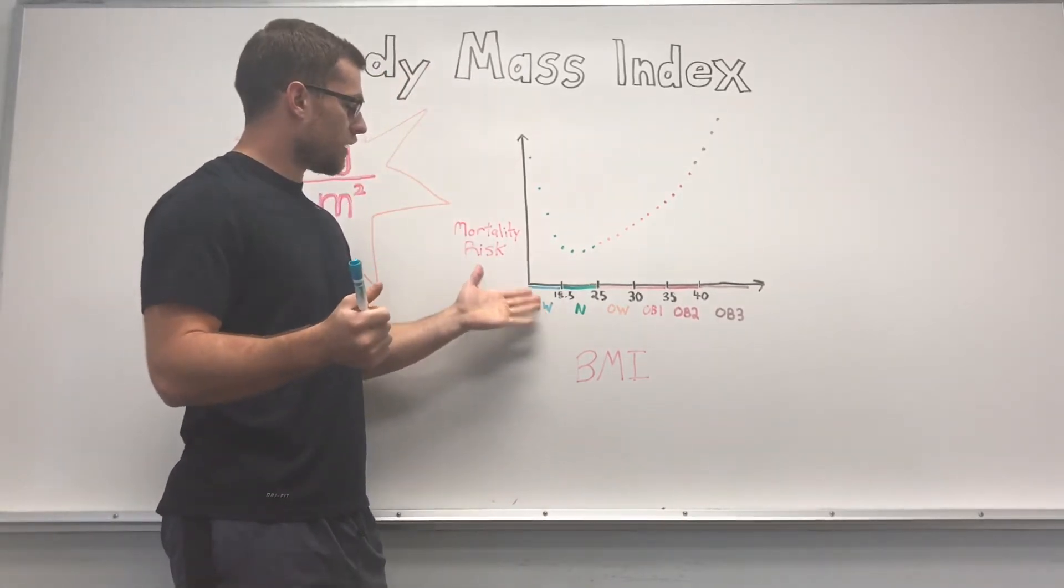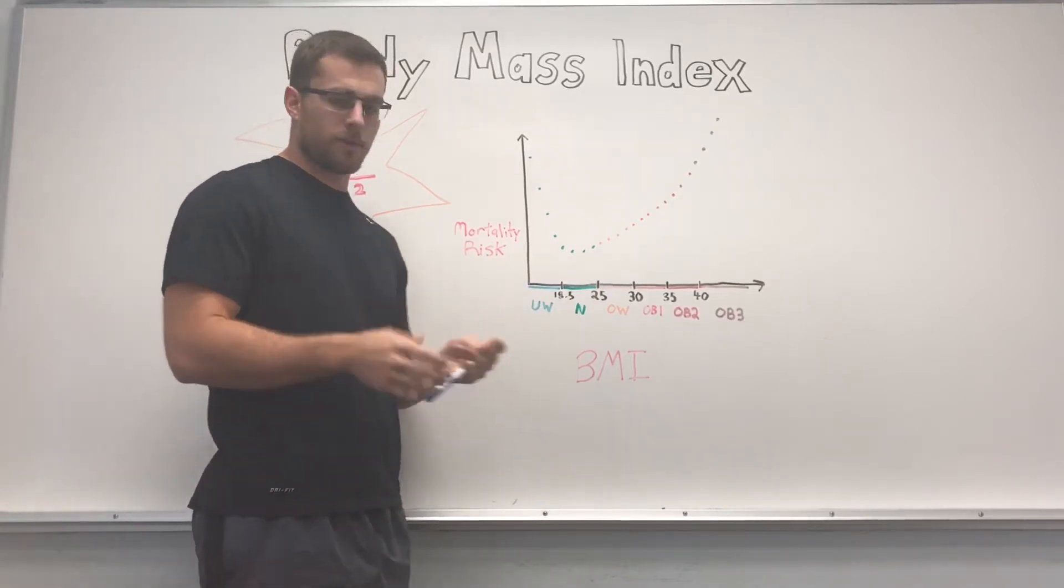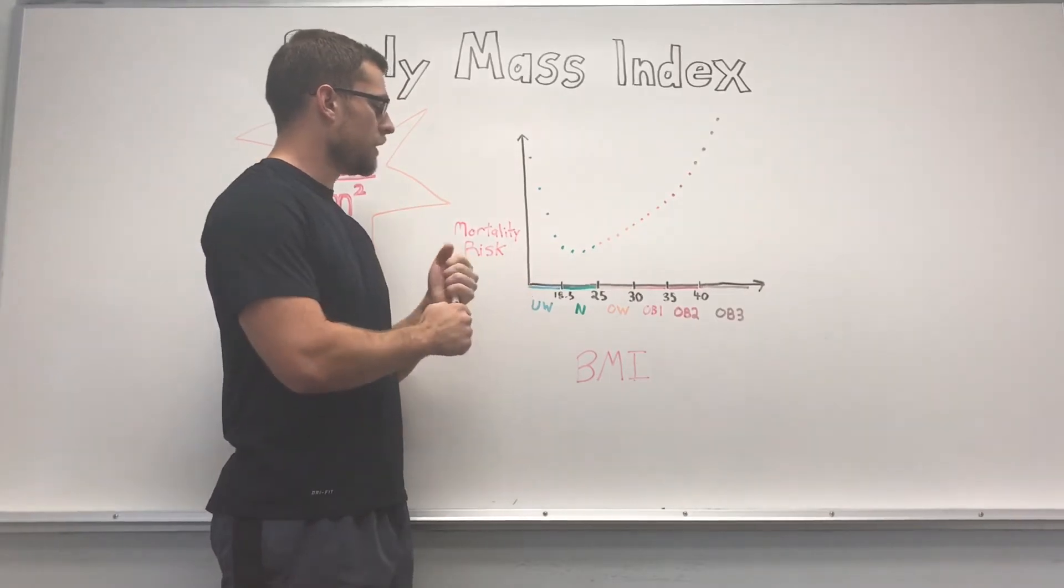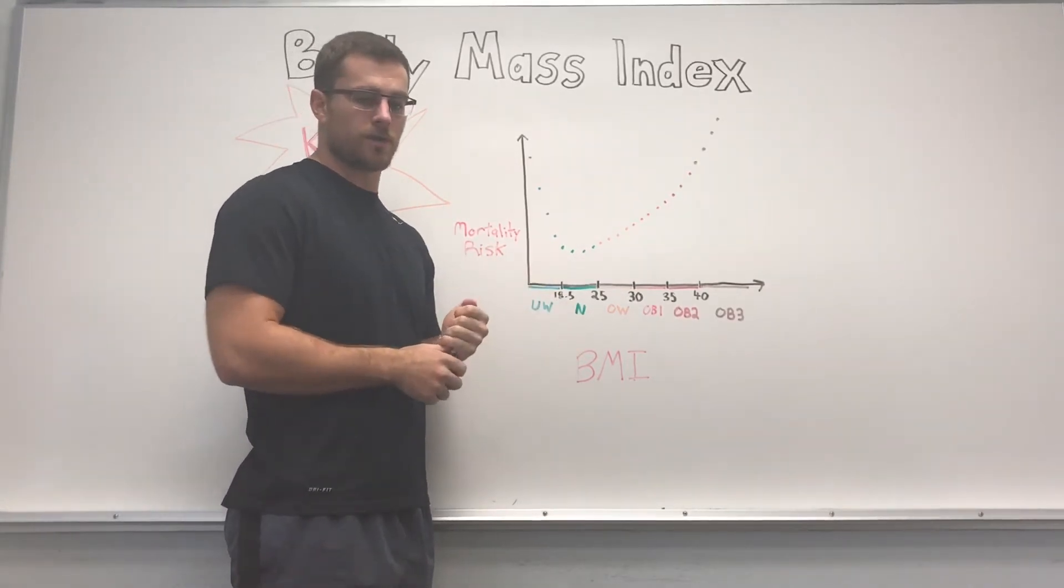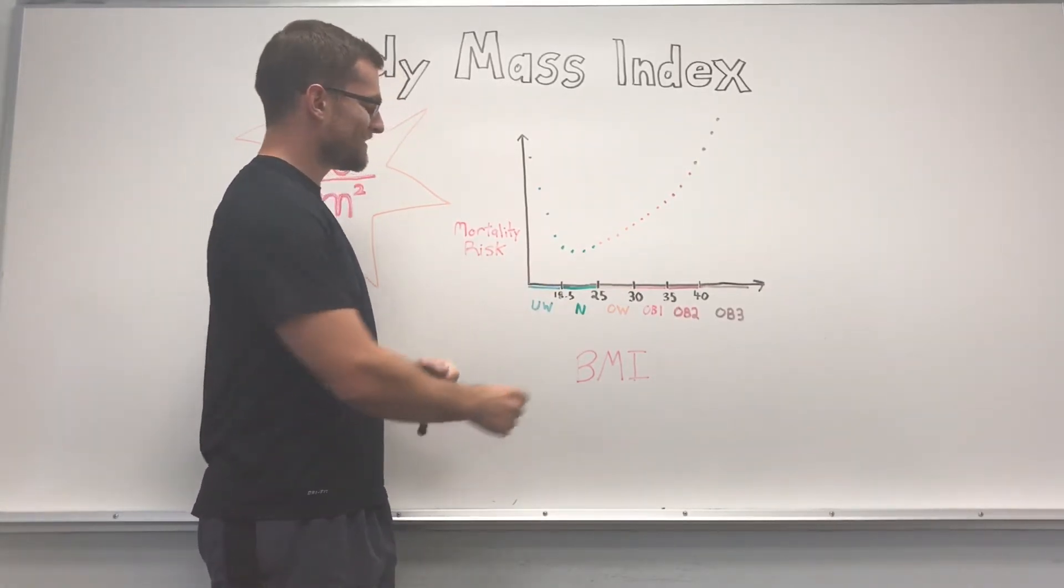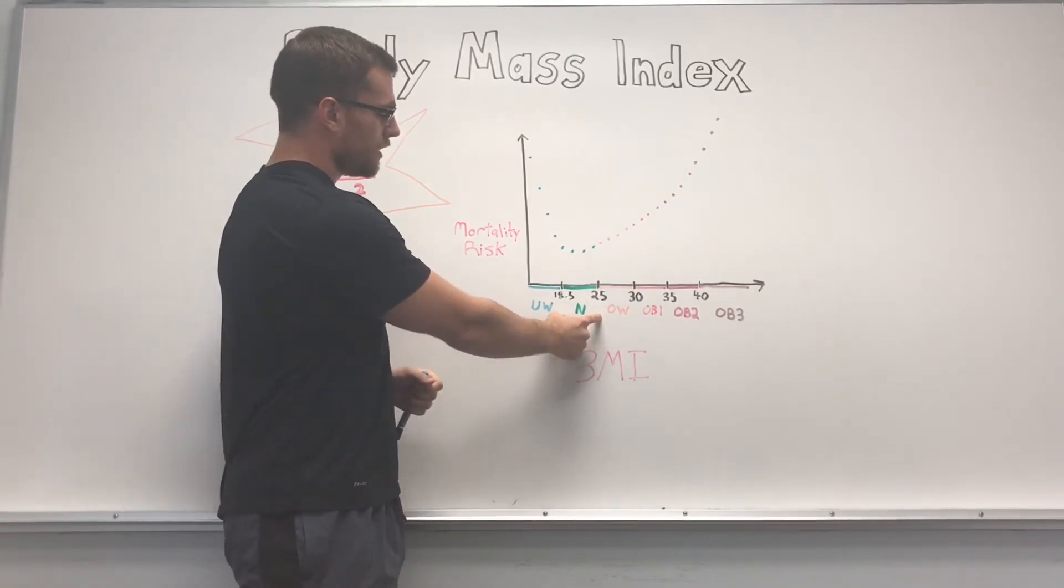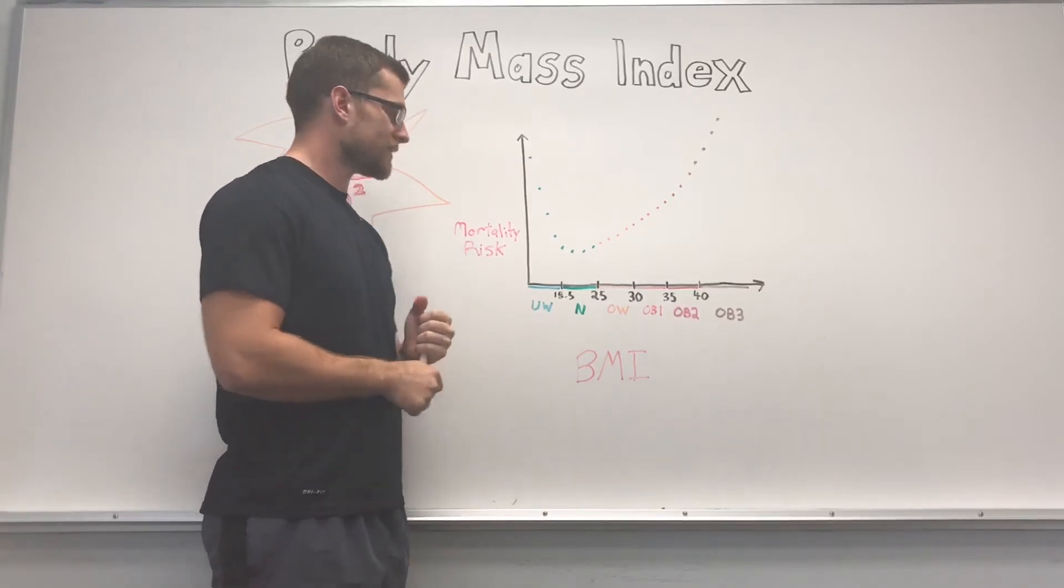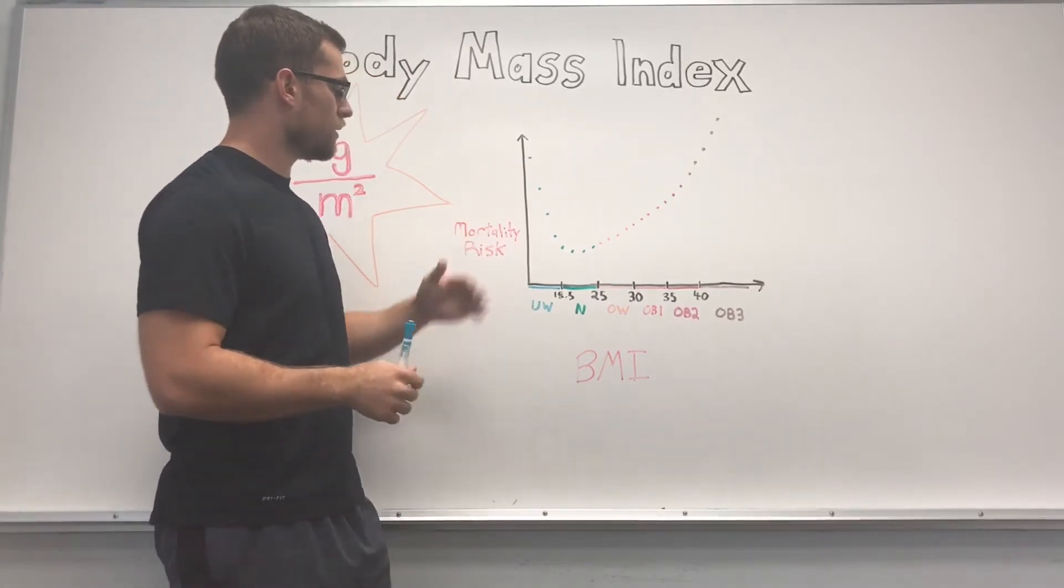The people that are in underweight categories, this tends to be maybe younger people, maybe women, they could benefit from whether it's resistance training or even a little bit of endurance training to get into that healthy BMI zone. Obviously we're aiming for that 18.5 to 24.9 BMI, that's kind of our healthiest and associated with the lowest risk.